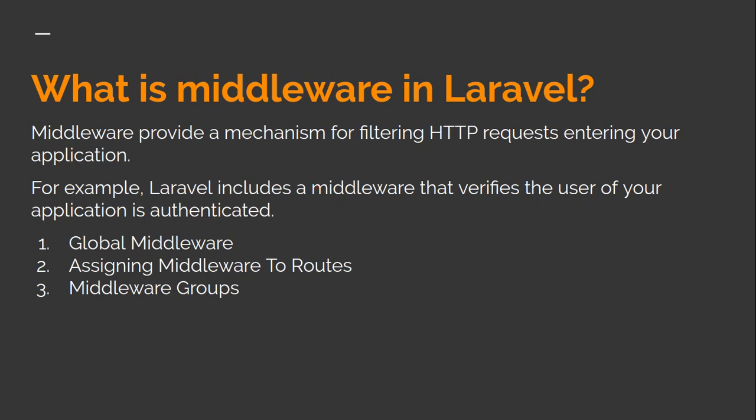What is middleware in Laravel? Middleware provides a mechanism for filtering the HTTP requests entering your application. When your application is ready and someone is hitting any page, logging in, or accessing any page, middleware checks whether the user is authenticated or not. It can also check other conditions, for example whether the user is more than 18 years old or coming from a specific country — it can check anything before the user reaches the current page.